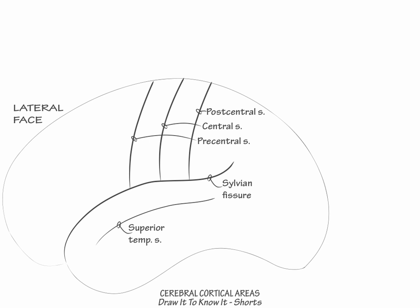Now between the post-central and central sulci, within the post-central gyrus, label the primary sensory area, Brodmann areas 3, 1, 2. Then between the central and pre-central sulci, within the pre-central gyrus, label the primary motor area, Brodmann area 4.